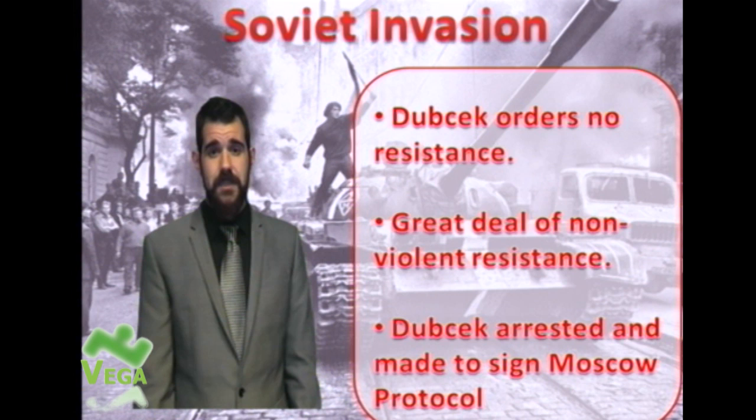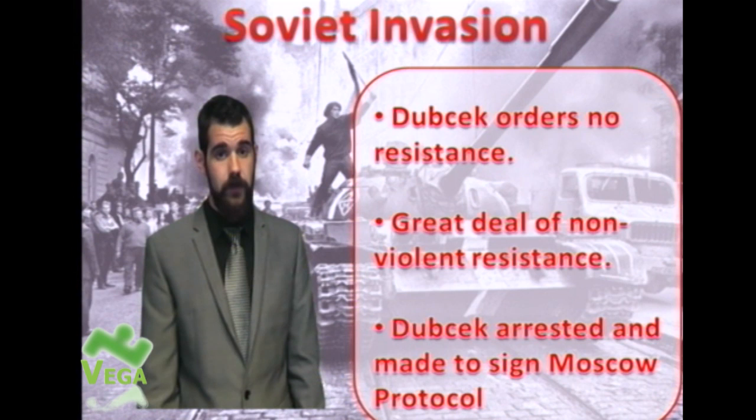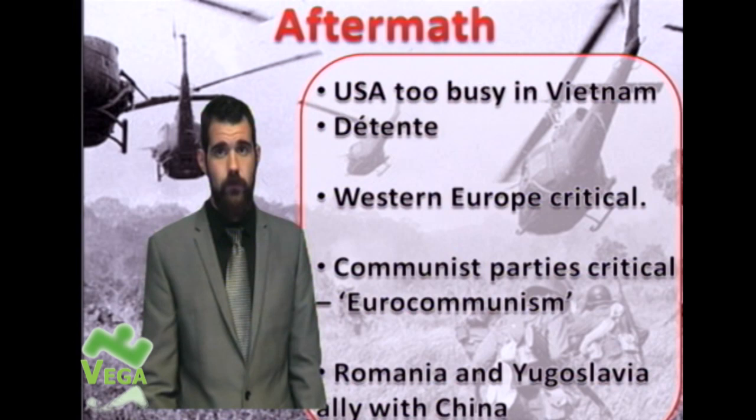Dubček gets arrested fairly promptly. He's taken to Moscow, where he signs what becomes known as the Moscow Protocol — effectively confirming that the reforms he had been allowed stay allowed, and those he was told were not allowed are not allowed. It's a firming up of the informal agreement he had with Brezhnev before.